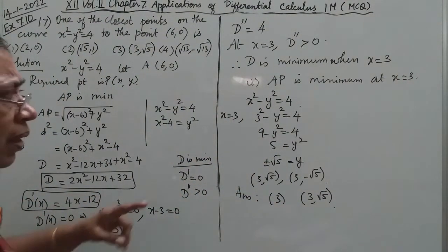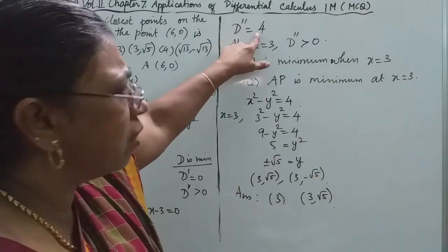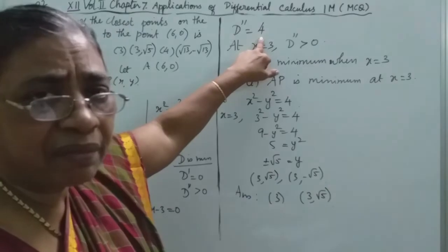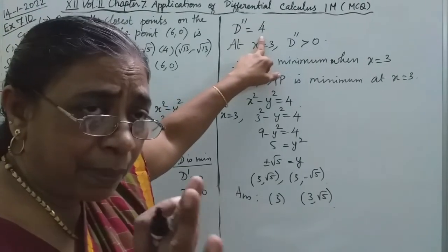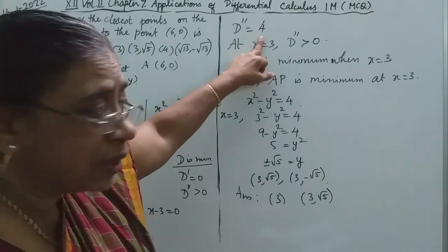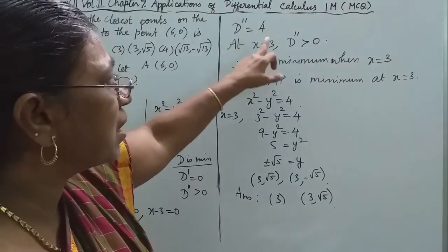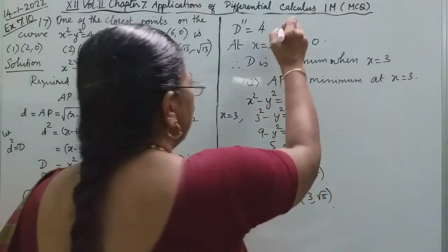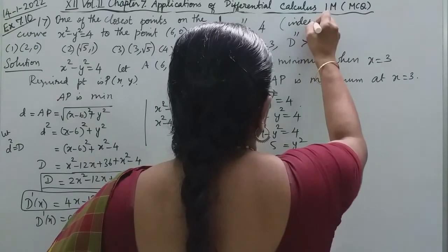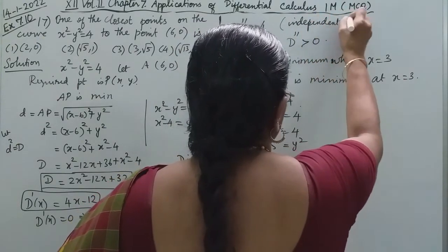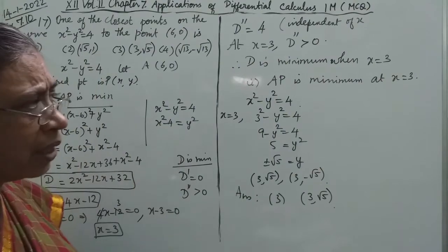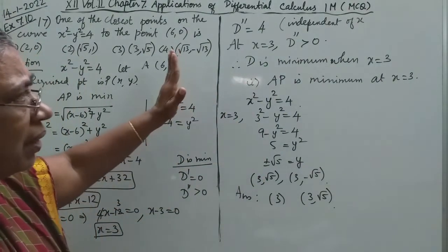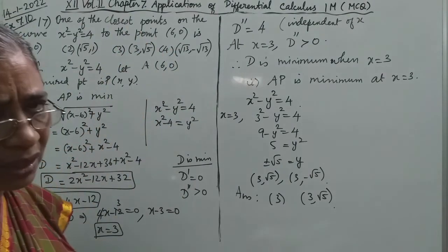Note that D double dash equals 4 is positive for all values of x — it is independent of x. So for any point on the hyperbola, D double dash is positive, confirming that x equals 3 gives a minimum. That's the answer.